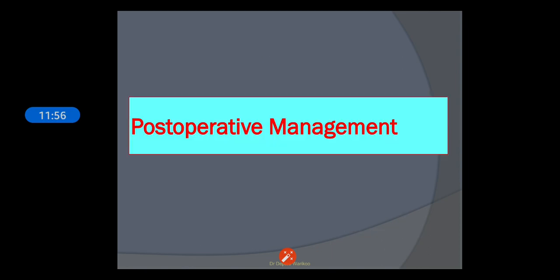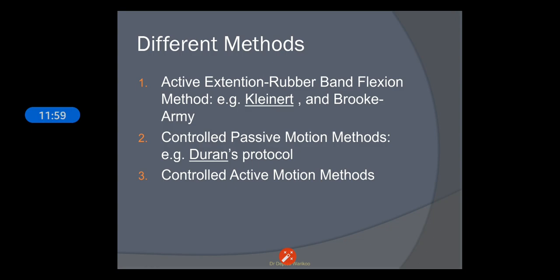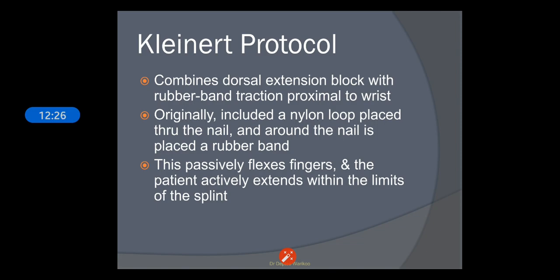The post-operative management involves different methods. We will see Boyer's pre-operative classifications and post-operative treatments, Duran's protocols, and Cannon's protocols. We will also deal with modified Duran protocols for tendon injuries. Kleinert's protocol combines dorsal extension block splinting with rubber band traction proximal to the wrist. Originally it included a nylon loop placed through and around the nail, which passively flexes the fingers while the patient actively extends within the limit of the splint.